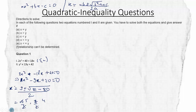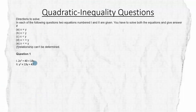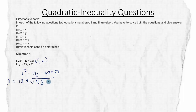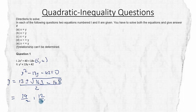Now we solve for Y. The equation is y² − 13y + 42 = 0. Using the formula: Y = (13 ± √(169 − 4×42)) / 2 = (13 ± √(169−168)) / 2 = (13 ± 1) / 2. So Y = (13+1)/2 = 14/2 = 7, and Y = (13−1)/2 = 12/2 = 6. We have two Y values: 6 and 7.